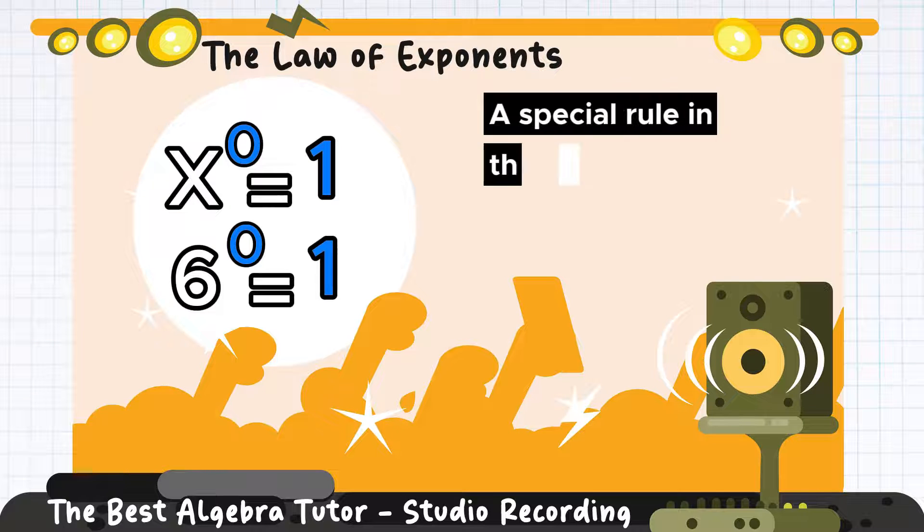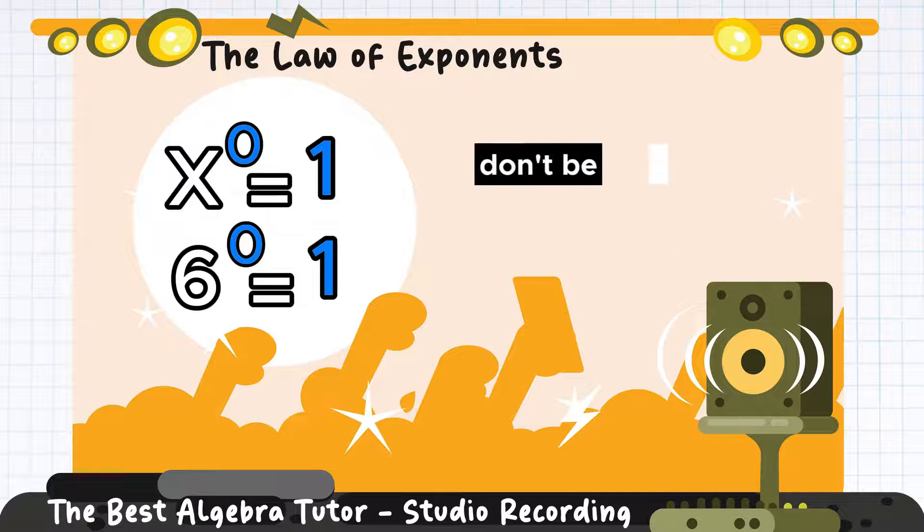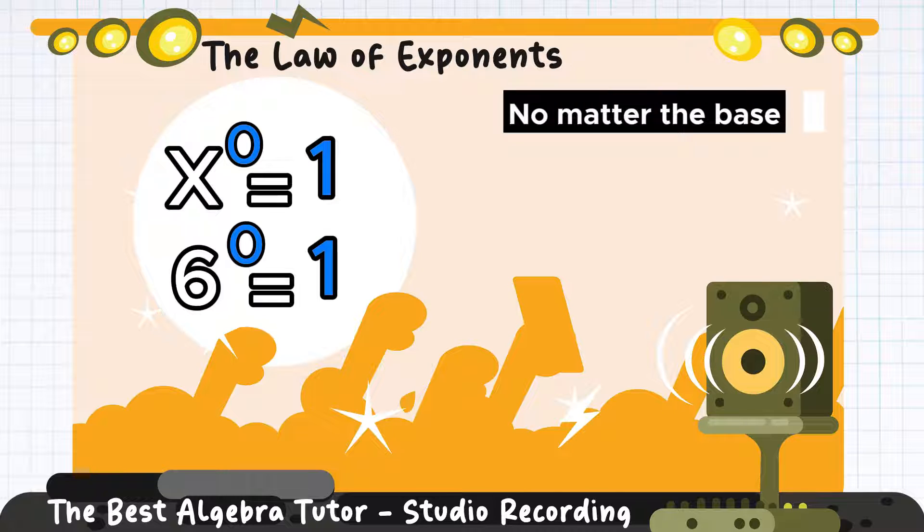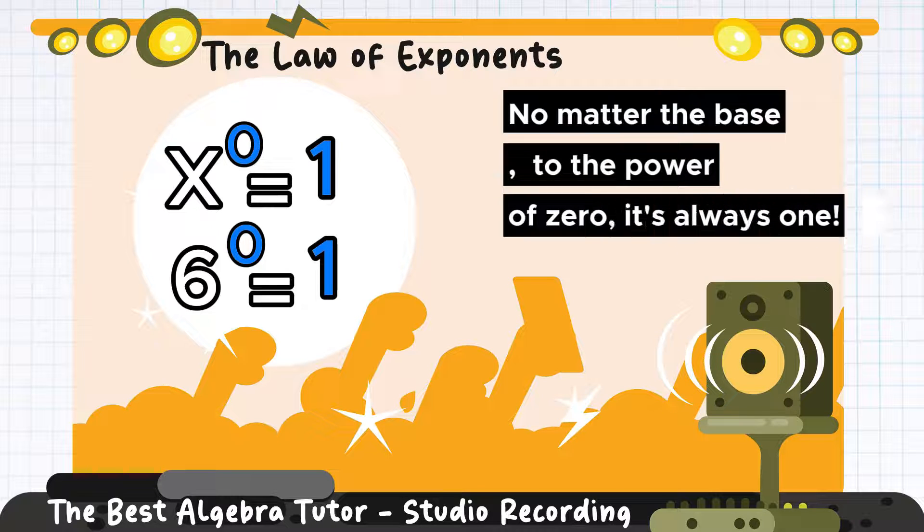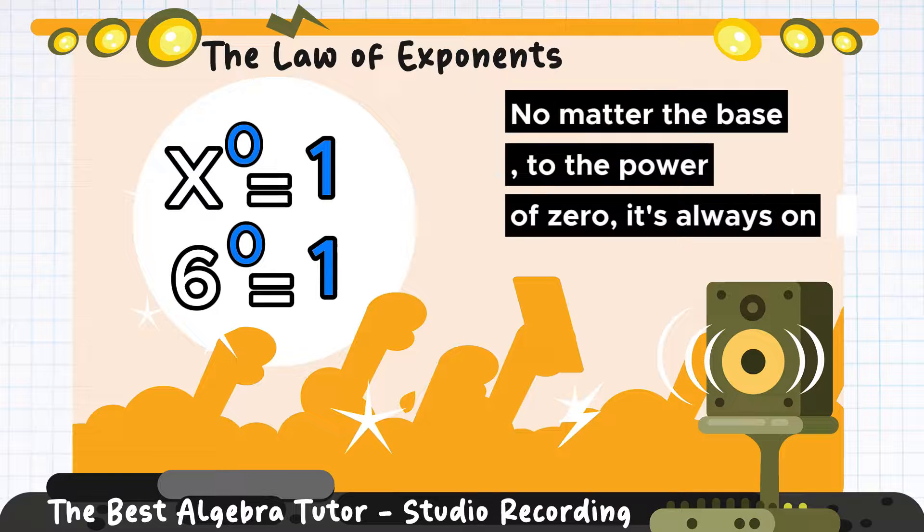A special rule in this math parade. A power to zero, don't be afraid. No matter the base to the power of zero, it's always one.